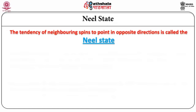What exactly are Neel states? This is required to understand spin waves in anti-ferromagnets. The tendency of neighboring spins to point in opposite directions is called a Neel state. For example, in a simple linear lattice, if lattice site one has a spin pointing up, then site two will be down, site three will be up, site four will be down, and so on.